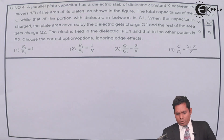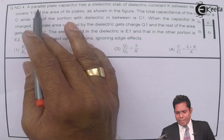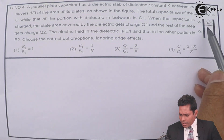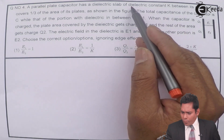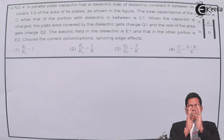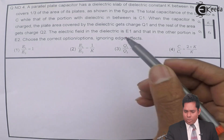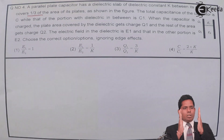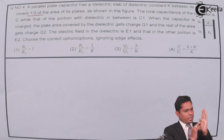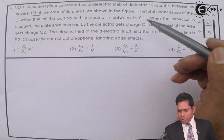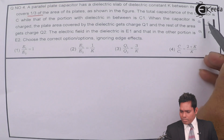The question: a parallel plate capacitor has a dielectric slab of dielectric constant K between its plates. The dielectric slab is introduced such that it covers one third of the area of the plates. So if this is the total area, only one third — from here to here — is covered with the dielectric of constant K.